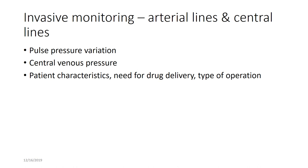You may need central access for inotropes or other vesicants that can't be delivered through a peripheral line, or for rapid transfusion in cases with anticipated large blood loss like a liver transplant. Another reason is if the patient's own disease — trauma, cardiac, or lung disease — requires it even if the procedure itself isn't very invasive. A very obese patient where a blood pressure cuff is unreliable and the arms are tucked may also warrant an arterial line.